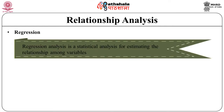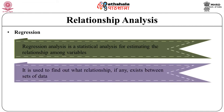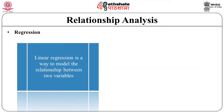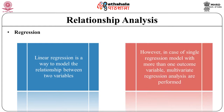Another important parameter is regression. Regression analysis is a statistical analysis for estimating the relationship among variables — used to find what relationship exists between sets of data and to find equations that fit the data. Linear regression is a way to model the relationship between two variables. However, in the case of a single regression model with more than one outcome variable, multivariate regression analysis is performed.